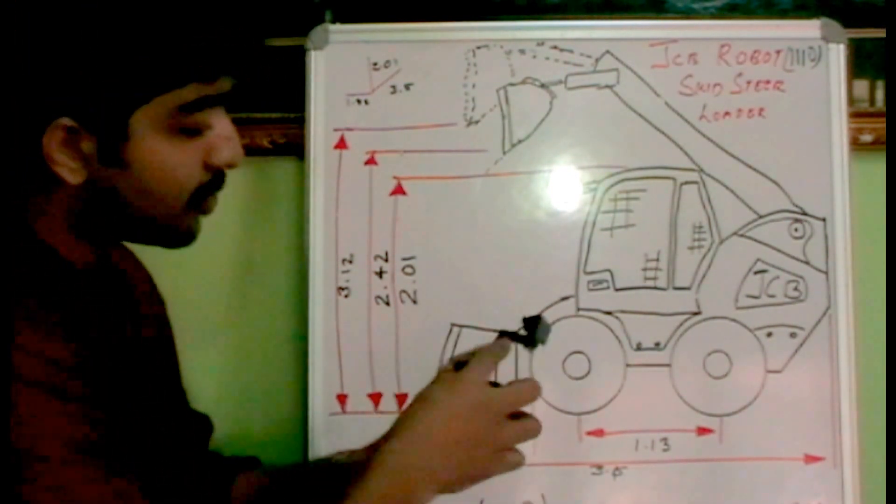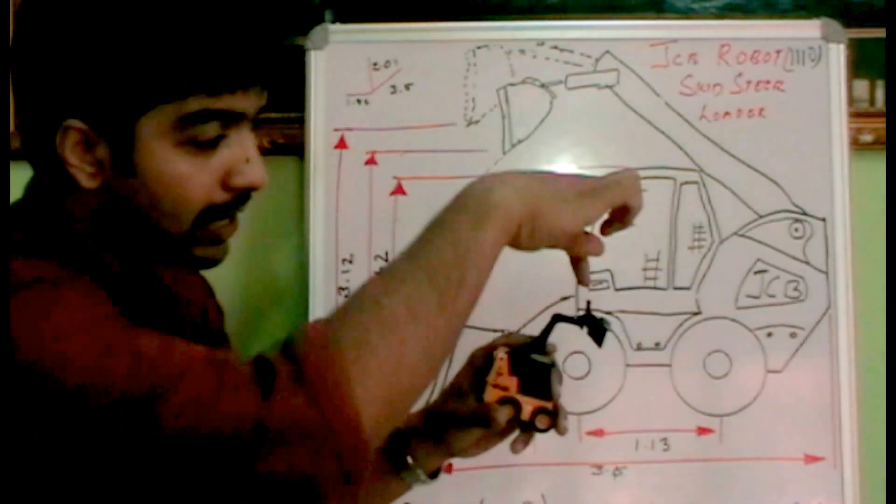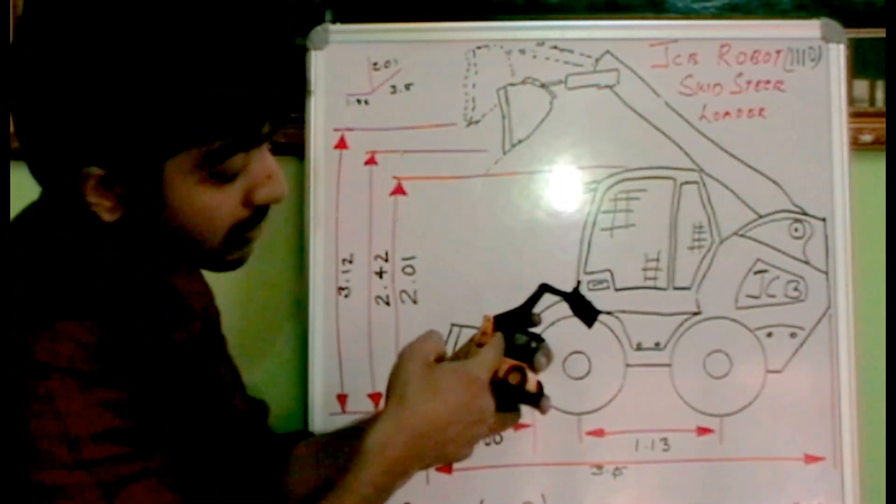And let's identify the main components. This is a loader arm on which the loader shovel is mounted. It is controlled by a hydraulic ram on the top of it.